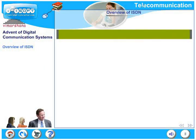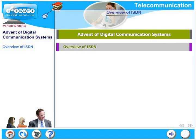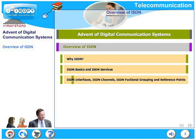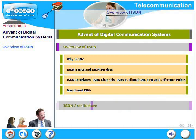In this section we will look at an overview of ISDN — Integrated Services Digital Network. We will look at why ISDN is required, then ISDN basics and ISDN services. After that we will get into network details: ISDN interfaces, ISDN channels, ISDN functional grouping, and reference points. Finally, we will round it off with an overview of broadband ISDN and ISDN architecture.